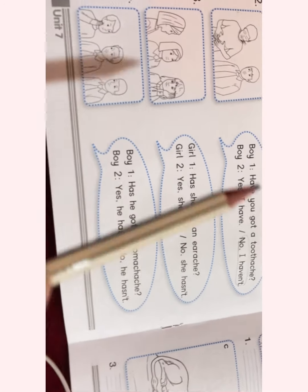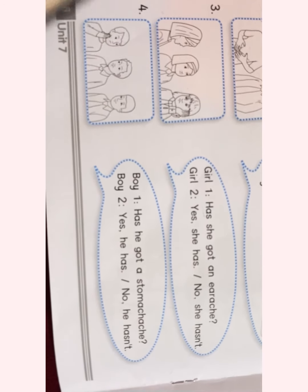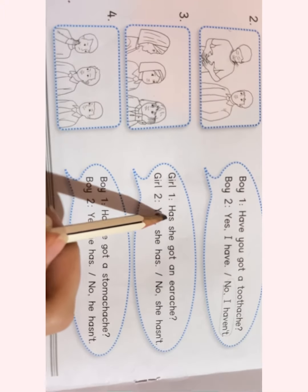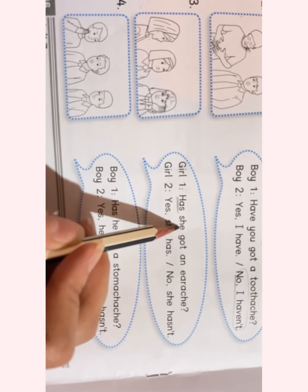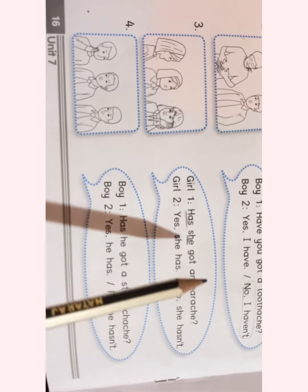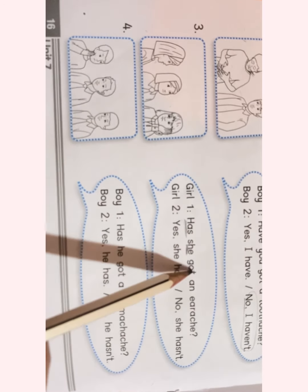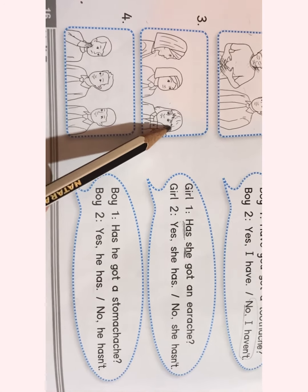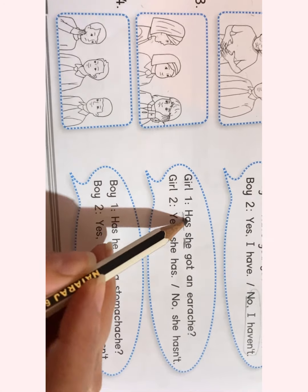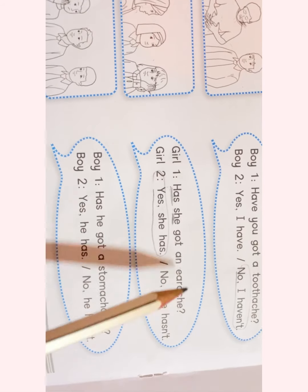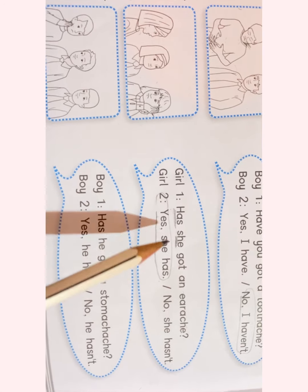Number three: three girls. One is asking: 'Has she got an earache?' Why did we use 'has'? Because the subject is singular — she. Has she got an earache? Yes, she has. We ask: has she got an earache? Yes, she has.